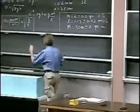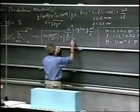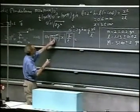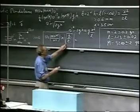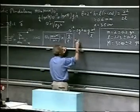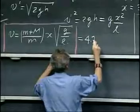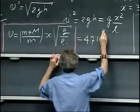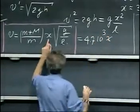So if I want to know now what the velocity is of the speed of the bullet, I can calculate what (M + m) divided by m is. I can calculate the square root of g over L. And with those numbers, I find 4.7 times 10 to the third times x. We have to measure x.